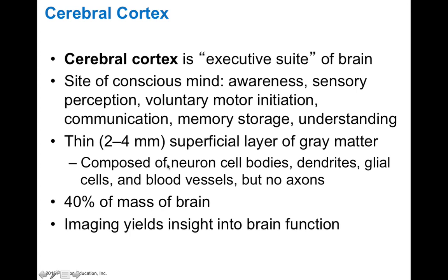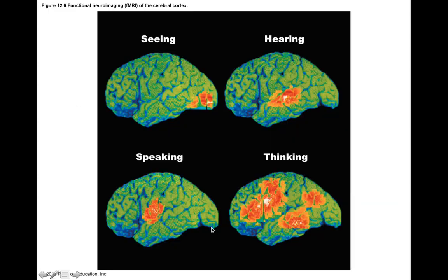Because the cortex is made of cells, it accounts for about 40% of your brain's mass since they're heavier and more dense. Brain imaging can yield insight into function — fMRI, or functional magnetic resonance imaging, tells us about different levels of brain activity over time. Using this scanner on a living person performing tasks shows which areas are most active. Seeing involves the occipital lobe, hearing involves primarily the temporal lobe, speaking involves the posterior frontal lobe, and thinking is more generally distributed across the brain.